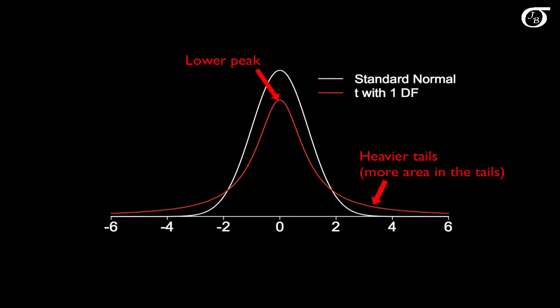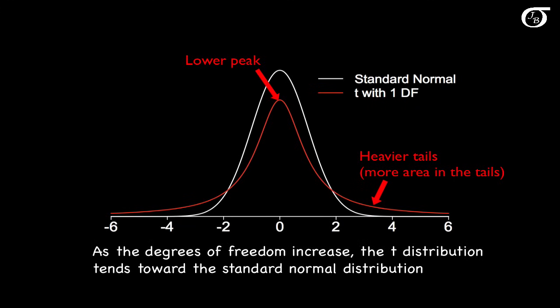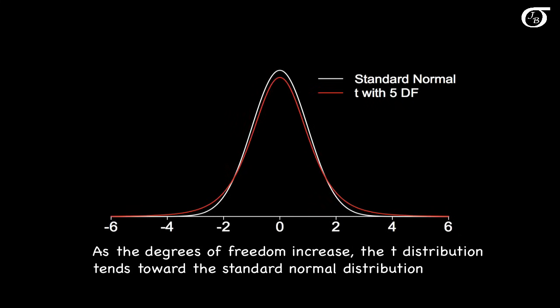The exact shape of the t-distribution depends on the degrees of freedom. A very fundamental point is that as the degrees of freedom increase, the t-distribution tends toward the standard normal distribution. As the degrees of freedom increase, we see the red curve getting closer and closer to the white curve — the t-distribution is tending towards the standard normal distribution.